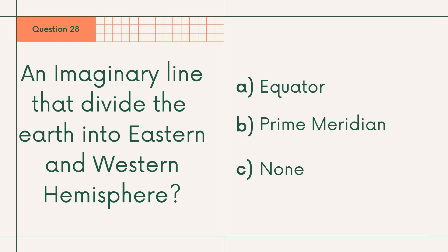Question 28: An imaginary line that divides the earth into eastern and western hemisphere is A. Equator, B. Prime Meridian, or C. None. Answer: B. Prime Meridian.